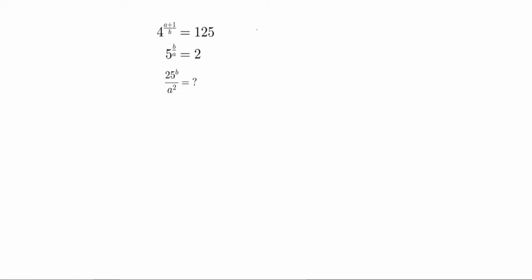Now we will solve 4 power a plus 1 by b is equal to 125. Keep the 4 on one side. This b goes to the other side — it goes upside — so we get 125 power b by a plus 1.